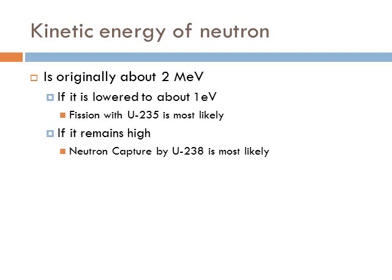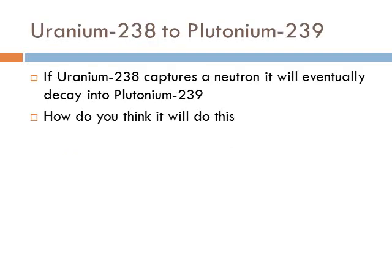When atoms split, the resulting particles typically have about two mega-eV of energy. Fission will most likely happen when neutrons have only a small amount of energy — about one eV. If the neutron energy is too high, the neutron will instead be captured by uranium-238, which just becomes uranium-239 without actually splitting. Uranium-238 captures the neutron and eventually decays into plutonium-239.